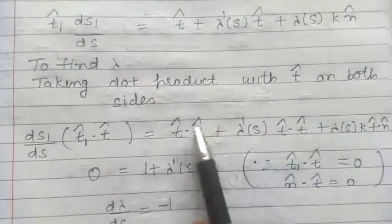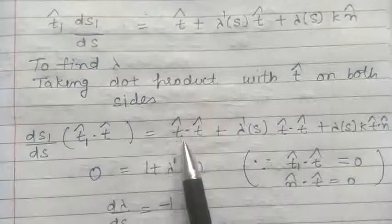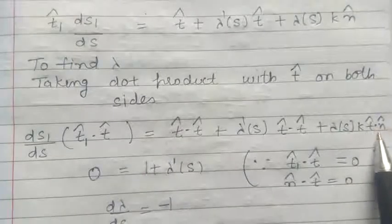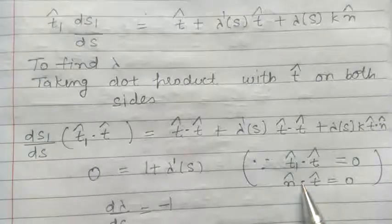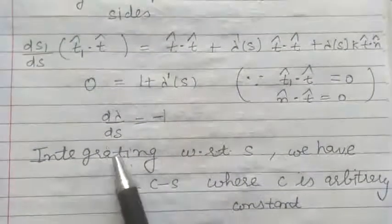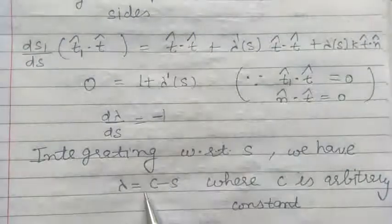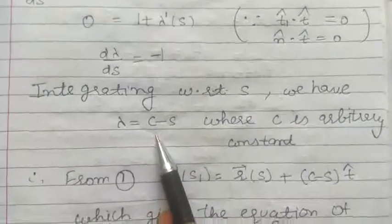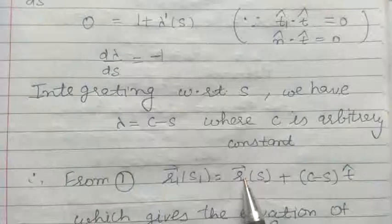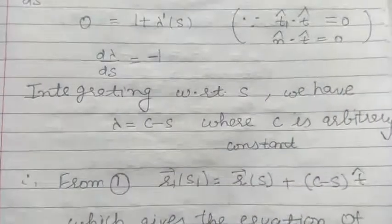To find the value of lambda, we take the dot product with vector T cap on both sides. Using the properties that T cap is a unit vector so T cap dot T cap equals one, and T and N are mutually perpendicular so their dot product is zero. From here we get d(lambda)/dS equals minus one. Integrating both sides with respect to S gives lambda equals minus S plus C, where C is the arbitrary constant of integration.